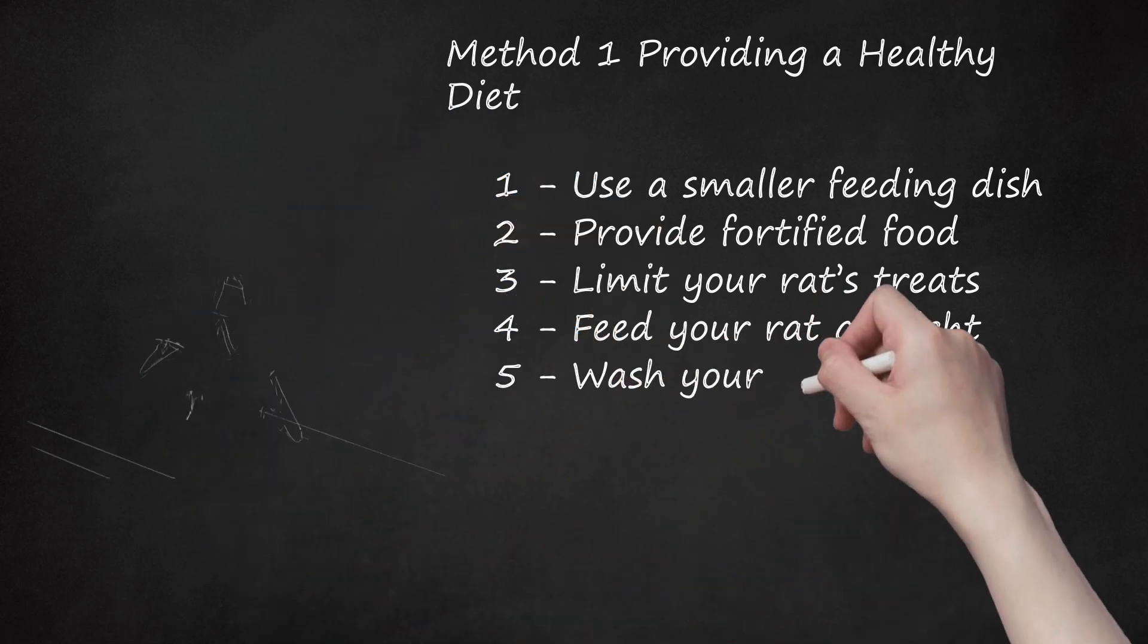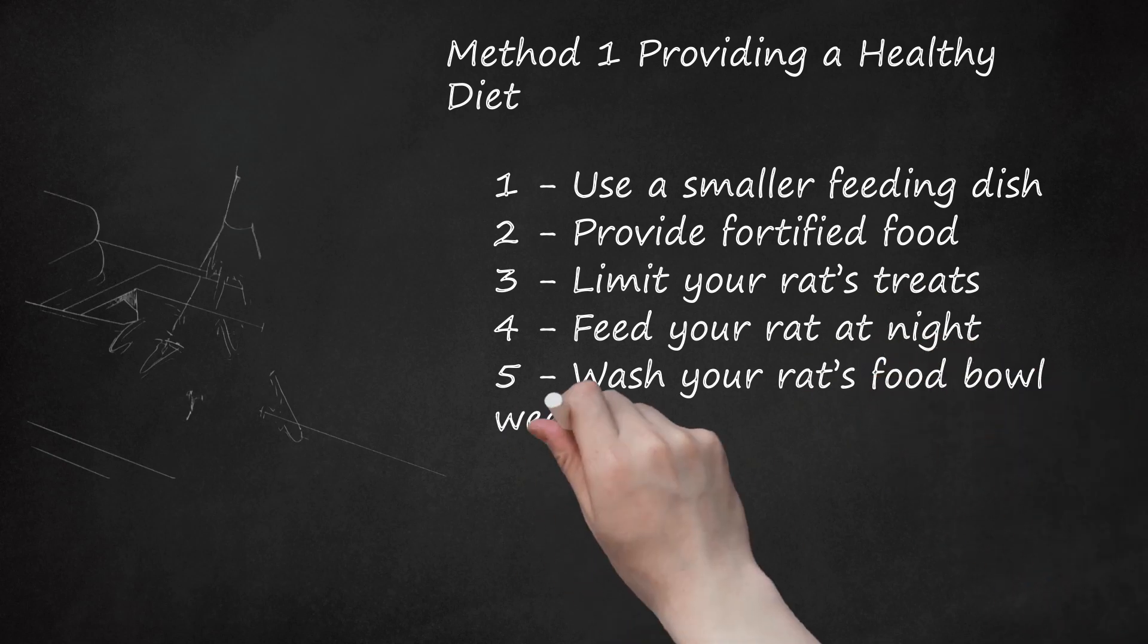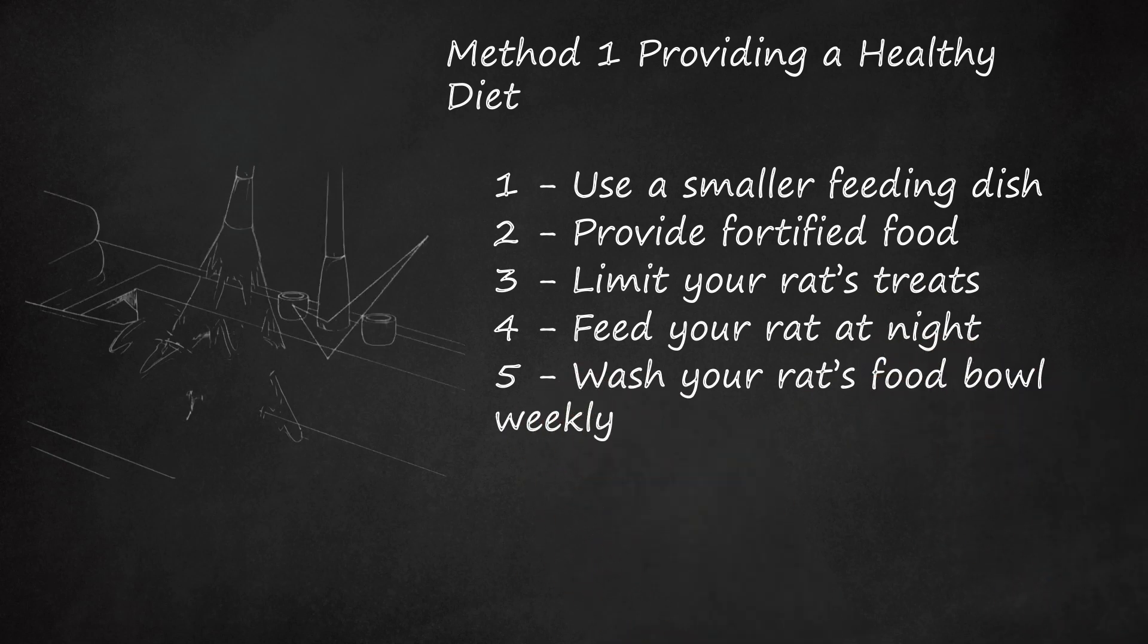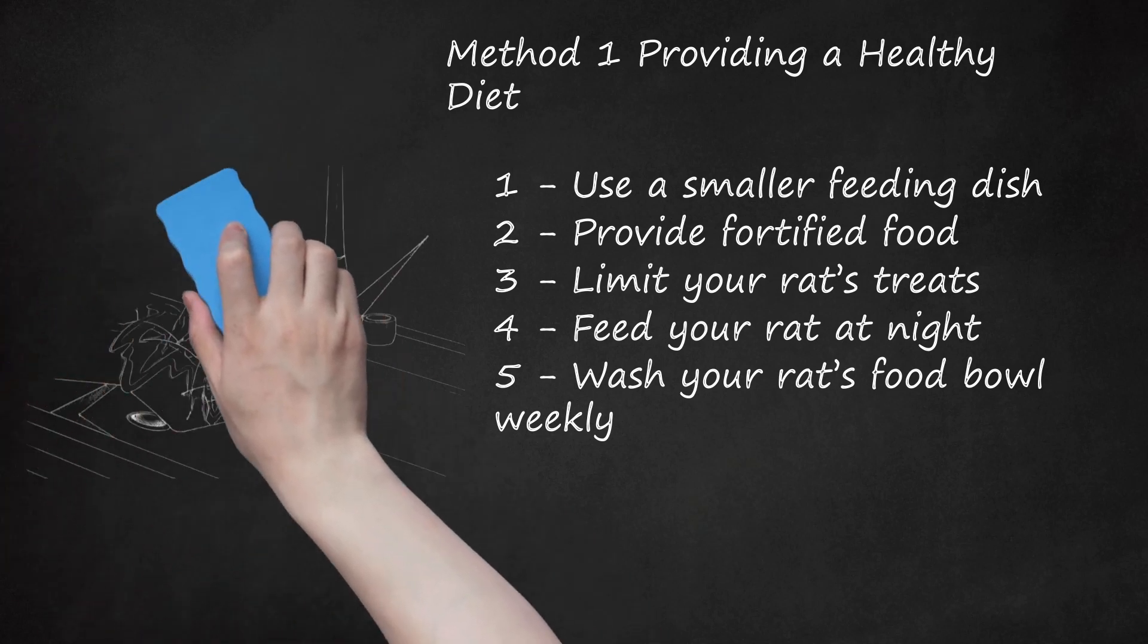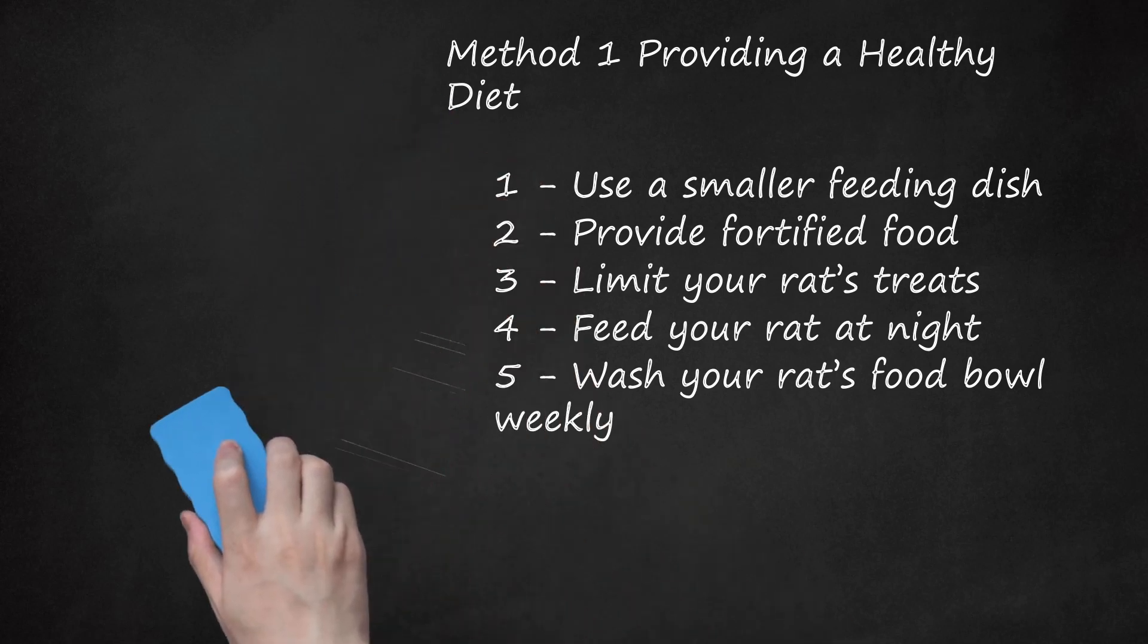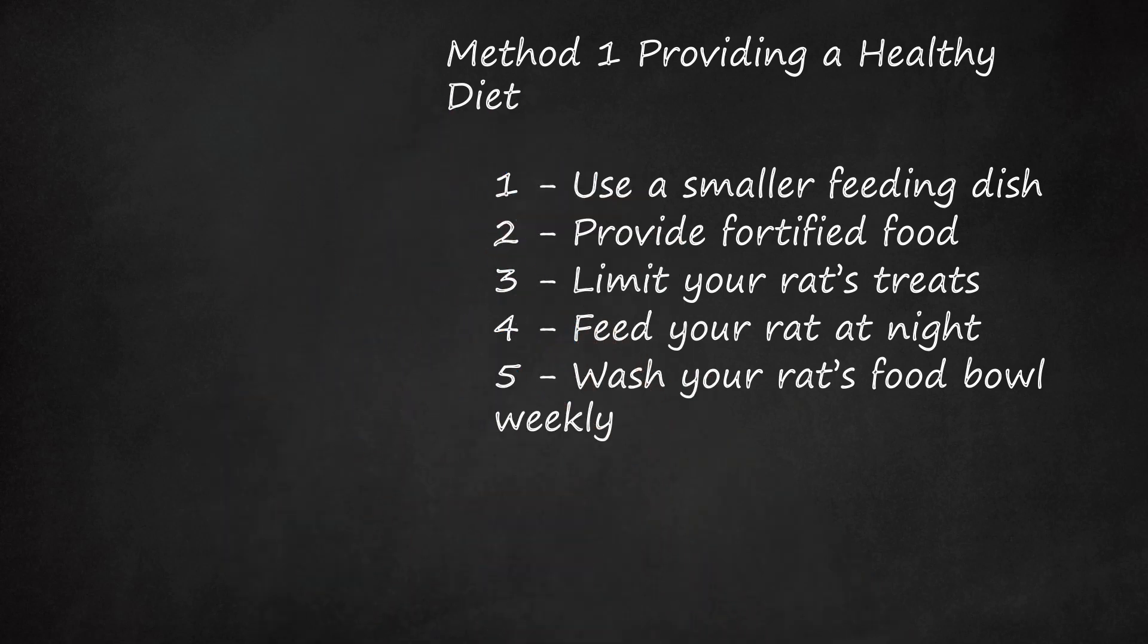Fifth, wash your rat's food bowl weekly. Make sure that it doesn't get caked with old food, which can lead to diseases. Scrub old food off with a wire brush or sponge, and use plenty of soap and water. Allow the food bowl to air dry. It's a good idea to wash out the food bowl at the same time as you clean out the rest of your rat's cage. Place your rat's food bowl at an opposite end of the cage from the rat's bathroom area.